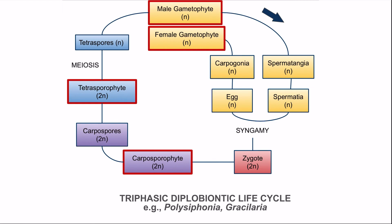So the carposporophyte is diploid. In the carposporophyte, diploid carpospores are formed, which germinate to form the diploid tetrasporophyte. In the tetrasporophyte, tetrasporangia are present. In the tetrasporangia, after reduction division or meiosis, haploid tetraspores are formed. Out of the four tetraspores formed per tetrasporangium, two germinate to form the male gametophyte and two germinate to form the female gametophyte. So the life cycle is triphasic and diplobiontic.